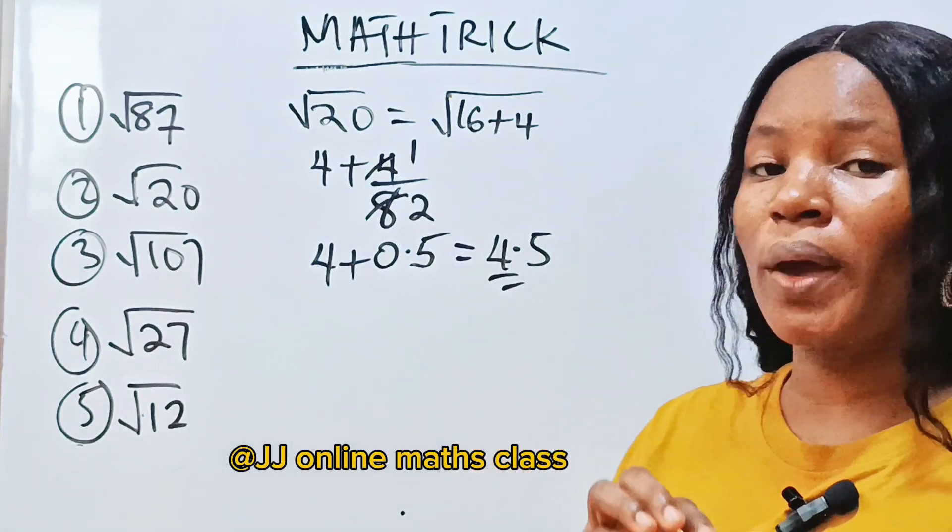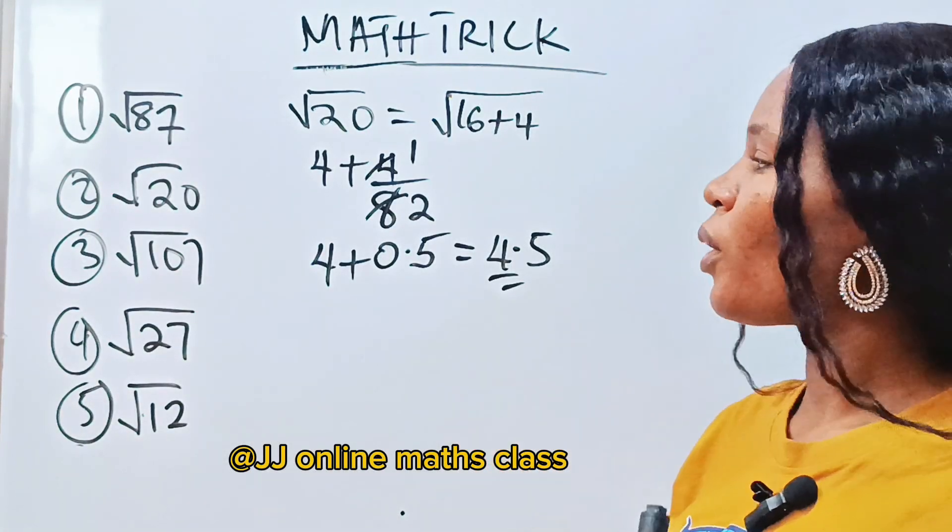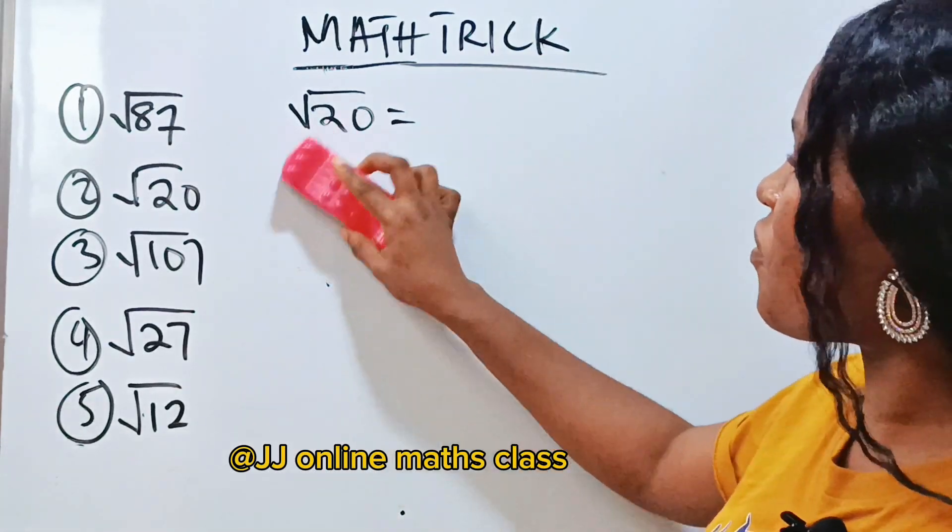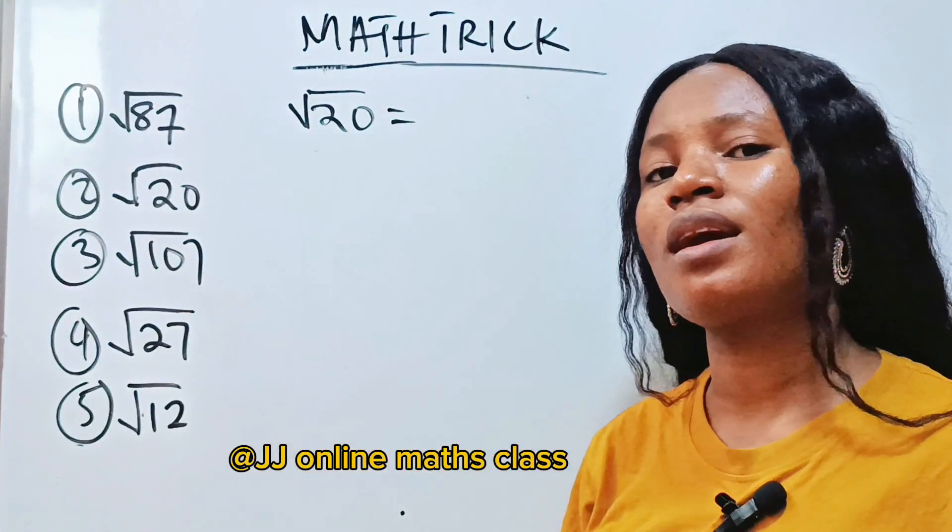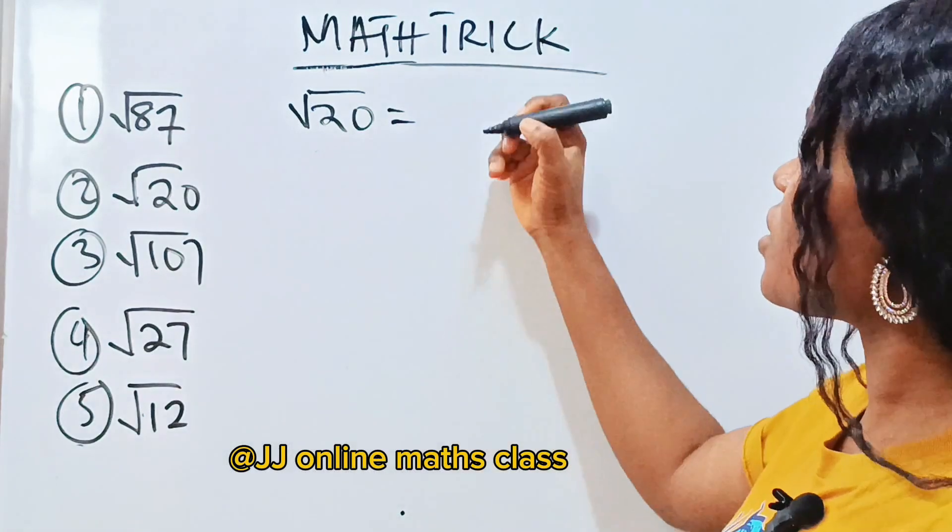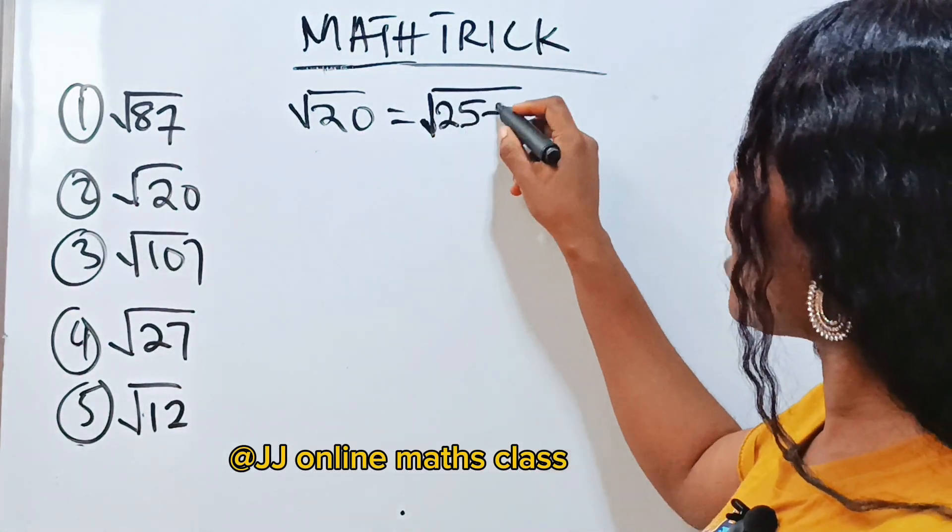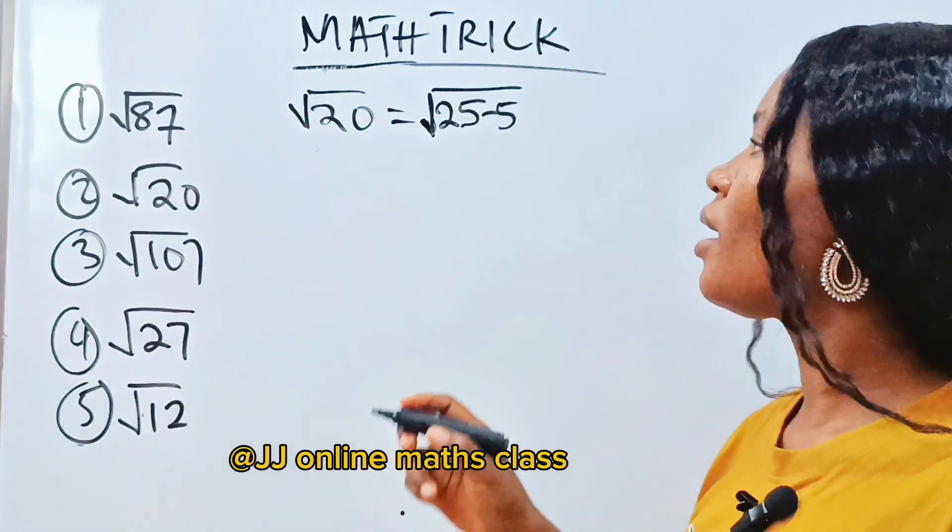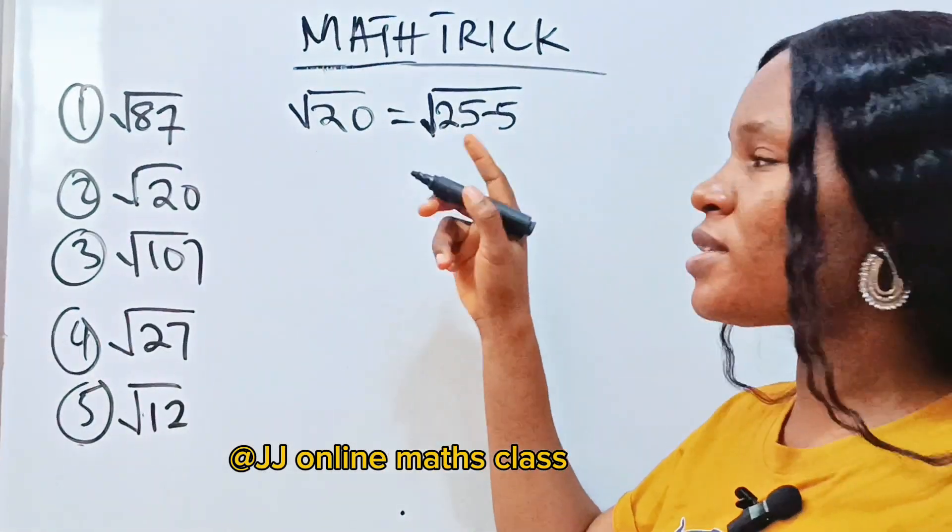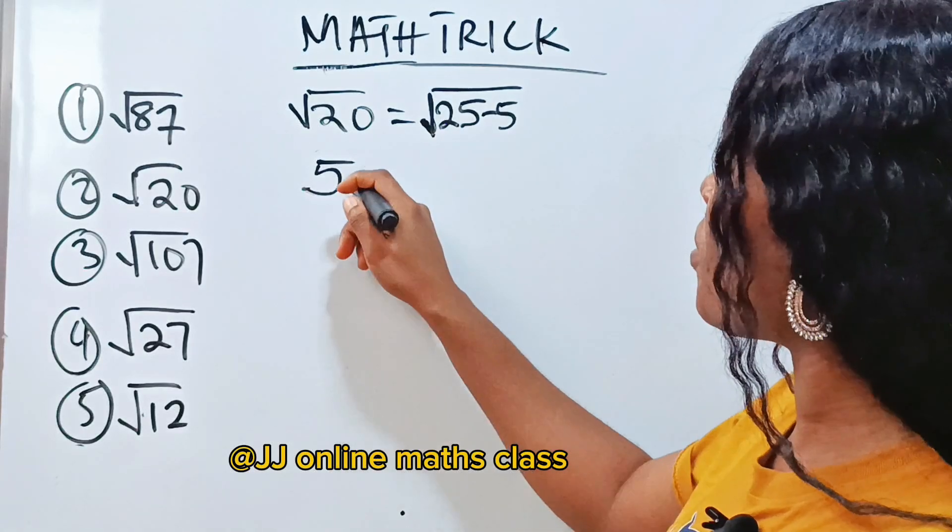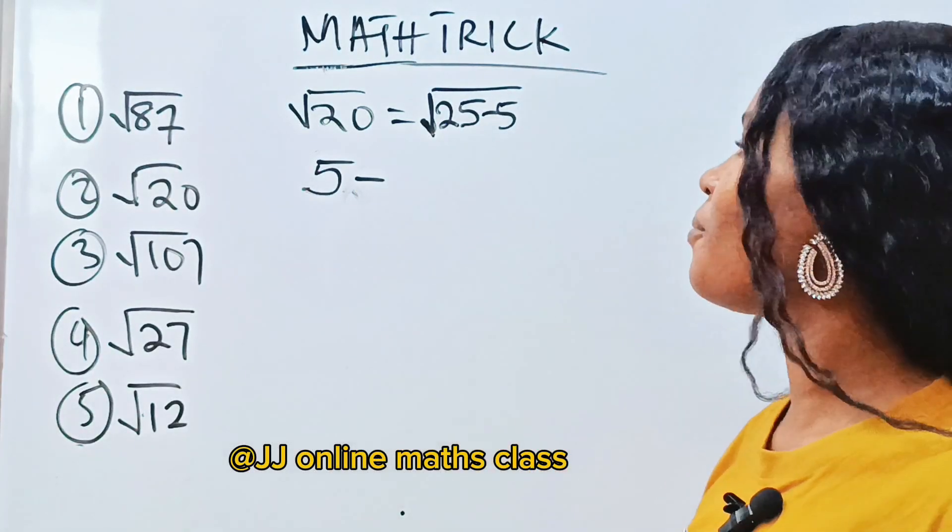Now there is another way you can get this. Which other way? Apart from 16, another number that is... There is a perfect square that is close to 20 is 25. So this time it is going to be what? 25 minus 5. Now what is square root of 25? That is 5.